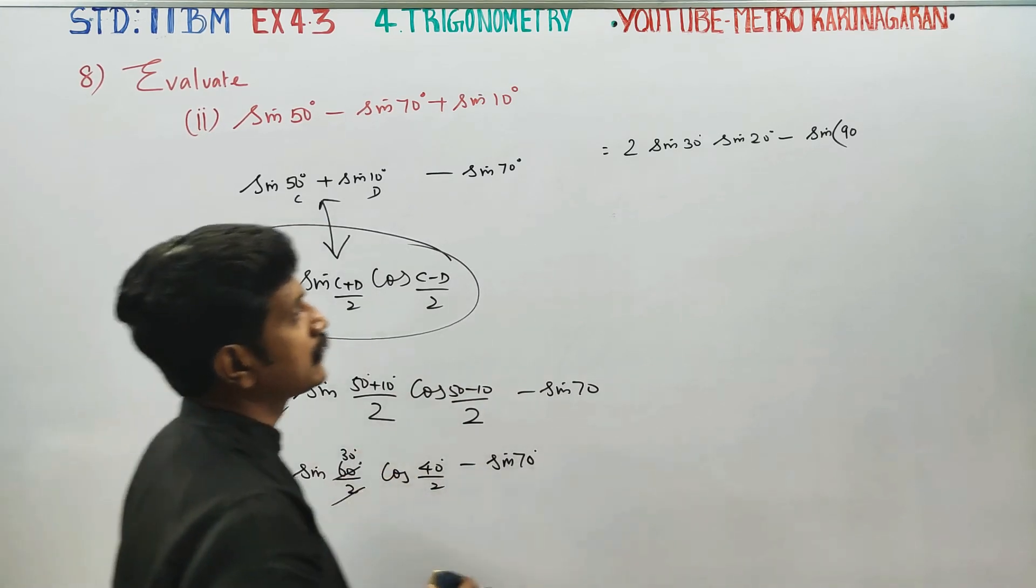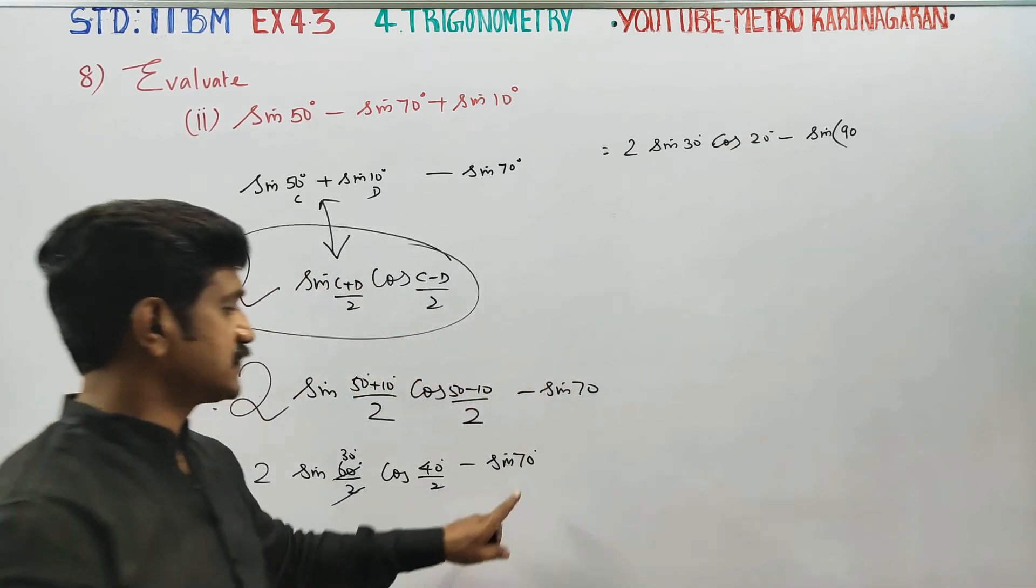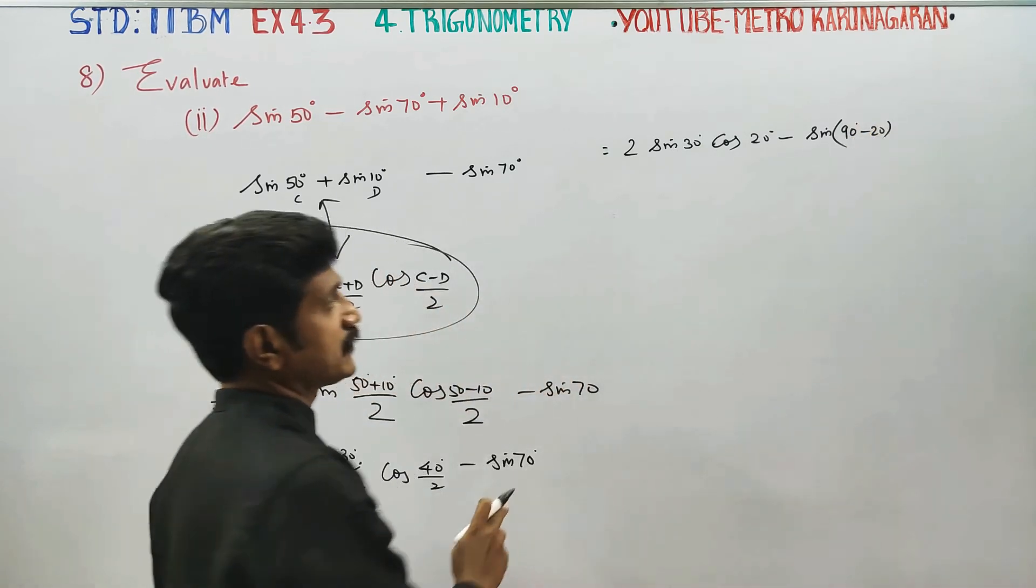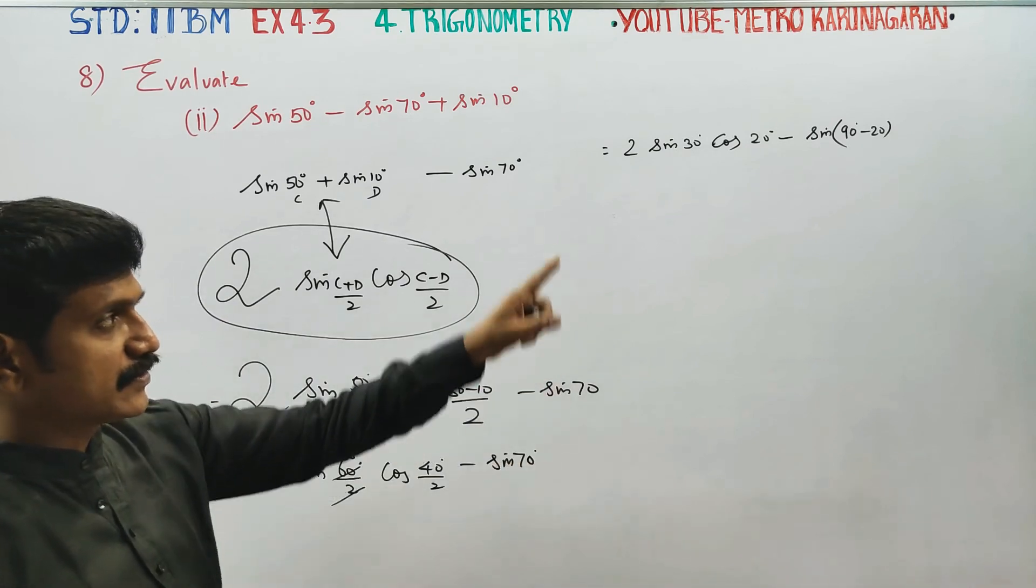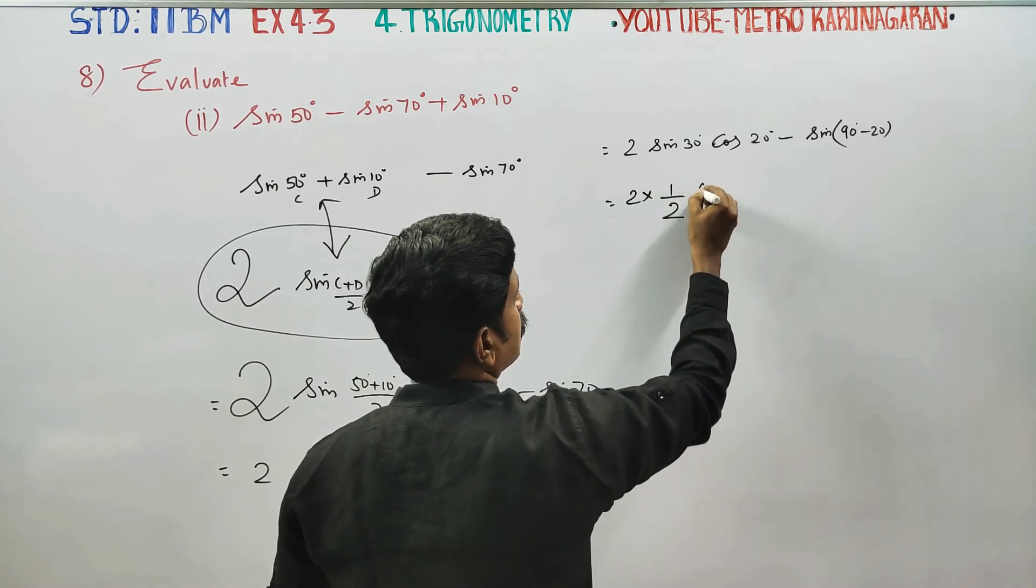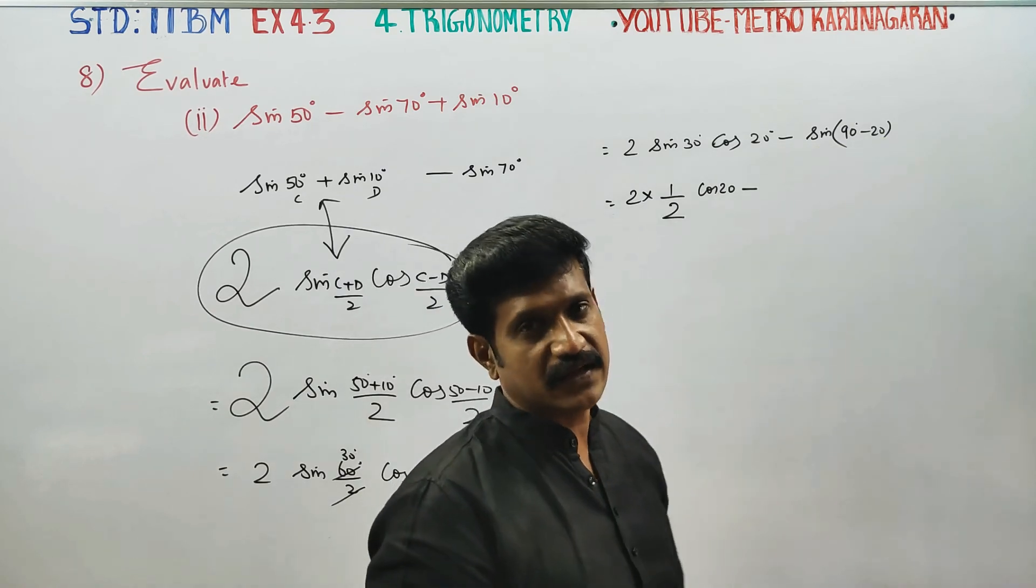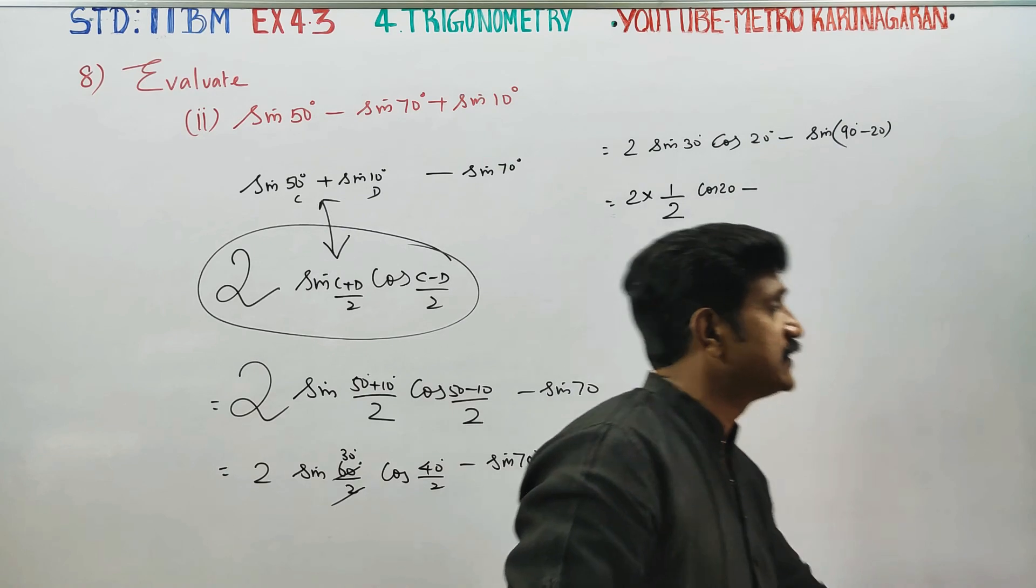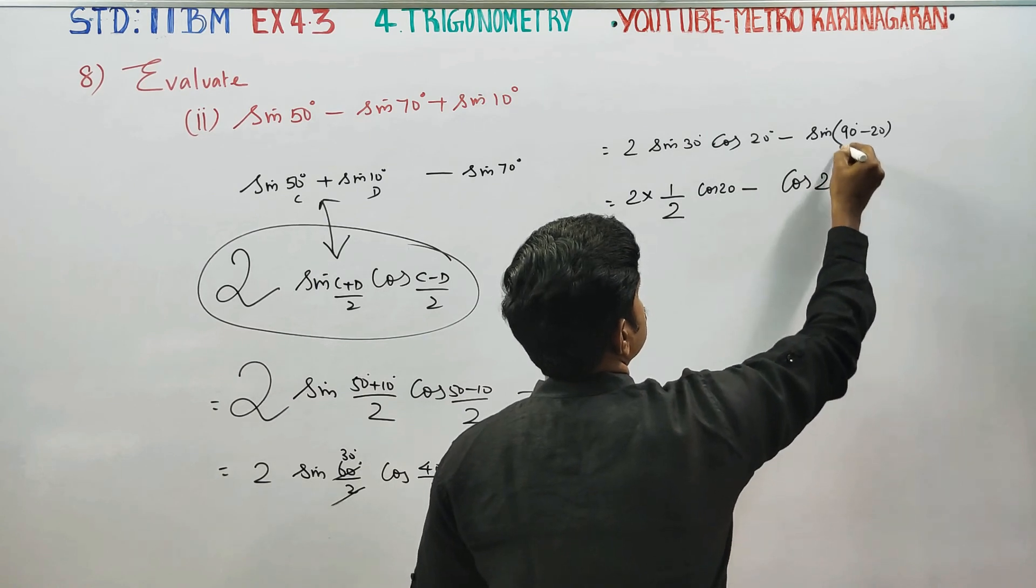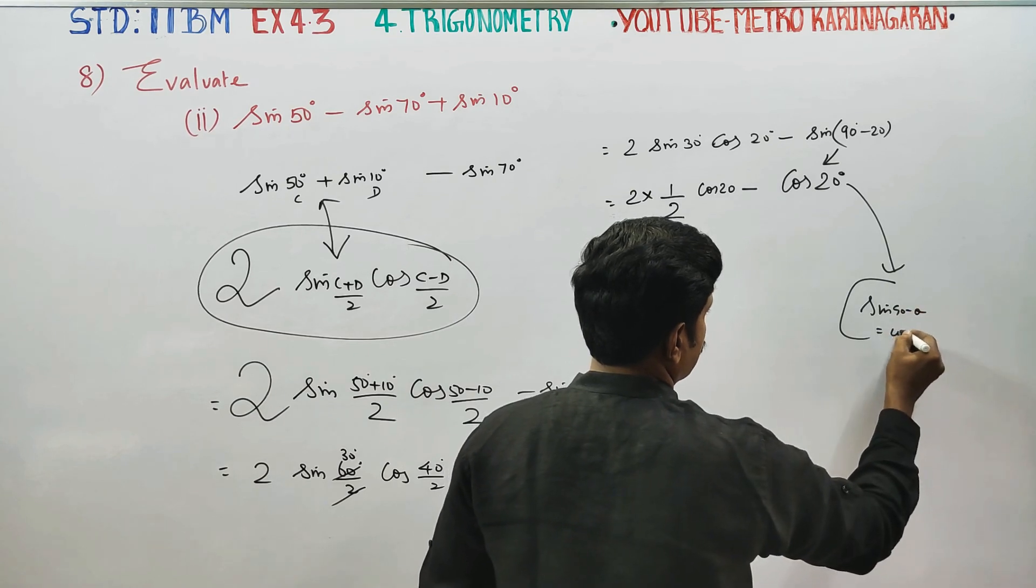Minus sin 90 minus 40, which becomes cos 40. Sin 70 by 2. 90-70 is 20, so cos 20. The formula from 10th standard: sin 90 minus theta is cos theta, cos 90 minus theta is sin theta.